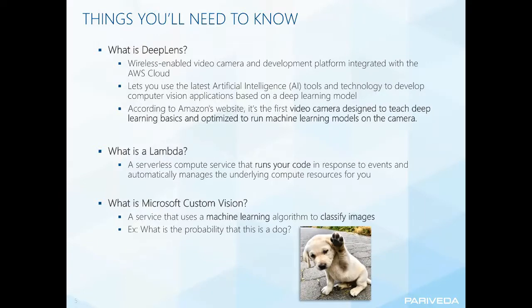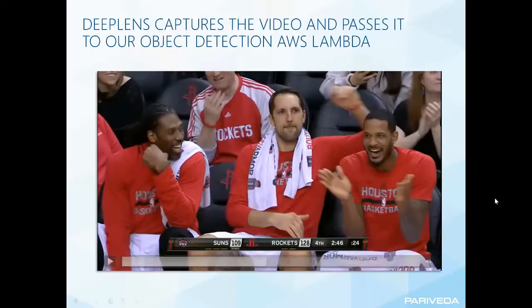Lastly, what is Microsoft Custom Vision? It's a service that uses a machine learning algorithm to classify images. An example of what we would get from that is: what is the probability that this photo is a photo of a dog? Now that we have the basics of what DeepLens, Lambda, and Custom Vision are, we can get started talking about the virtual basketball referee we've created.